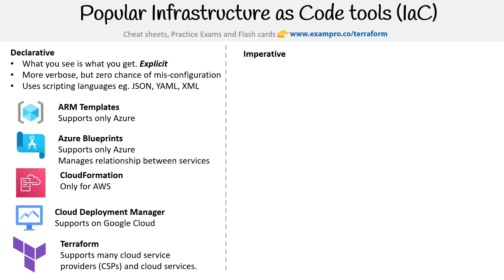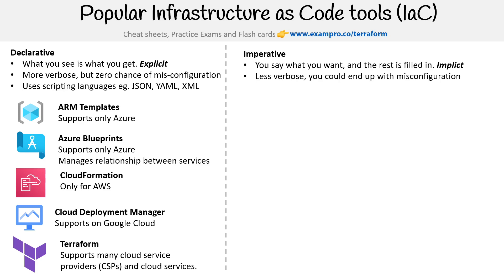On the right-hand side, we have imperative. You say what you want and the rest is filled in — everything here is implicit, it's less verbose, but you could end up with misconfiguration. For example, if you were to define a virtual machine, you might not have to provide every single option, and it would fill in the rest. If you weren't aware of what it was doing, that's where you could end up with misconfiguration. Though imperative tools generally try to have their defaults as best practices, so you're not usually in a bad position, but you might end up with something you don't expect.